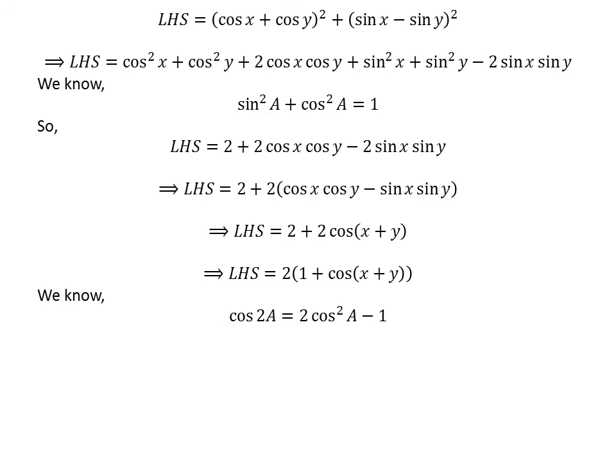We know the double-angle identity: cosine of x plus y is equal to 2 times square of cosine of x plus y upon 2, minus 1. The proof of this trigonometric identity is given in the video appearing in the upper-right corner of this video. The link of the video is also given in the description section.